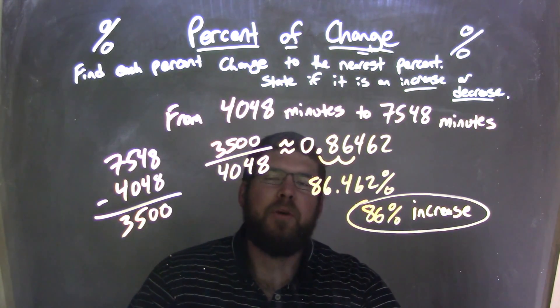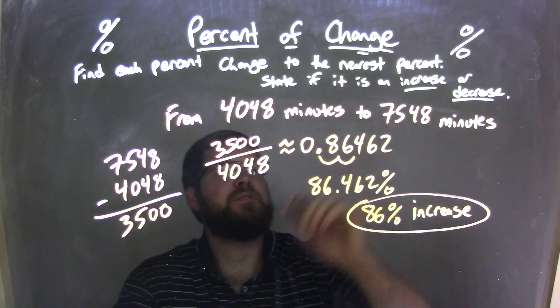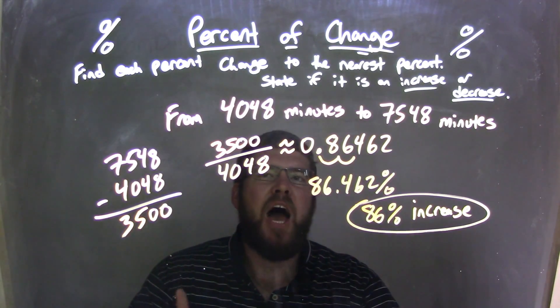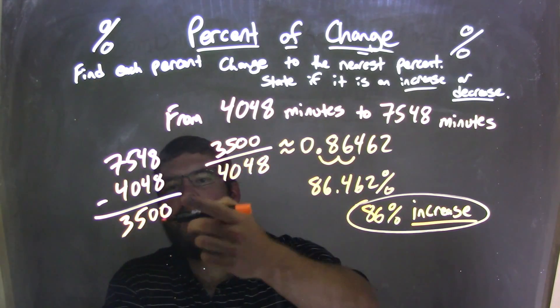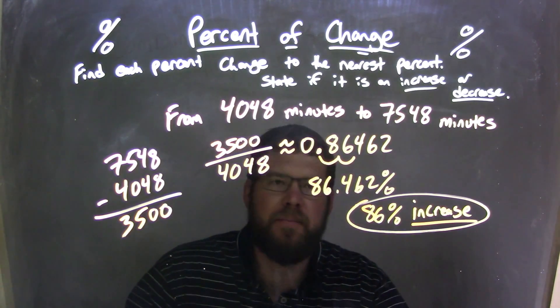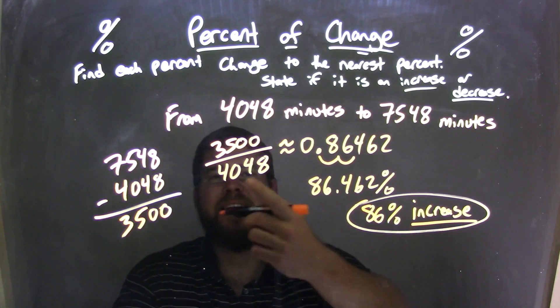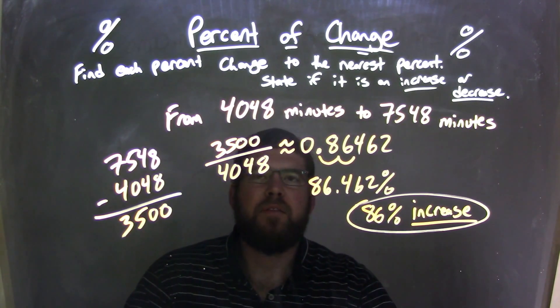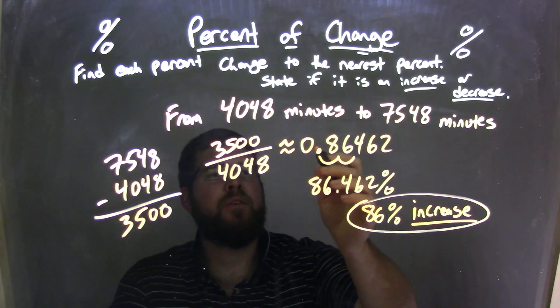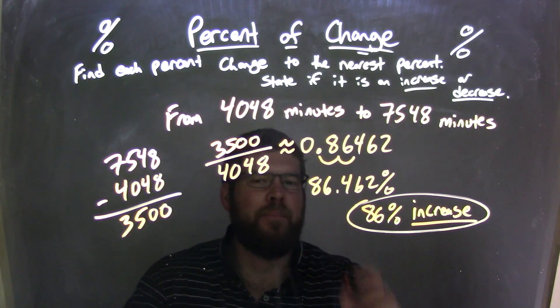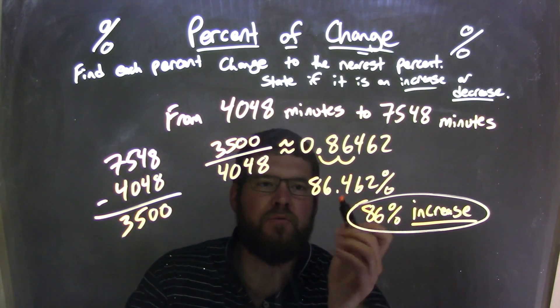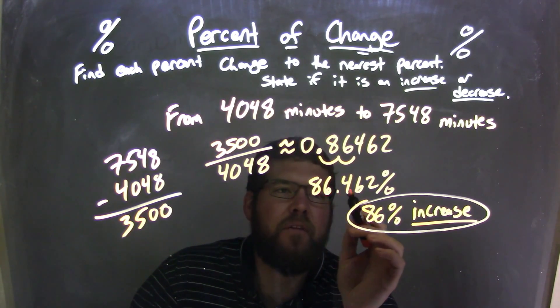So let's recap. We started from 4,048 minutes to 7,548 minutes. I recognized first that that was an increase. I then found the difference between the two numbers and it came out to be 3,500. I took that 3,500 and divided it by the first number, 4,048, to get approximately 0.86462. I converted that decimal to be a percent by moving the decimal two units to the right. So we have 86.462 percent.